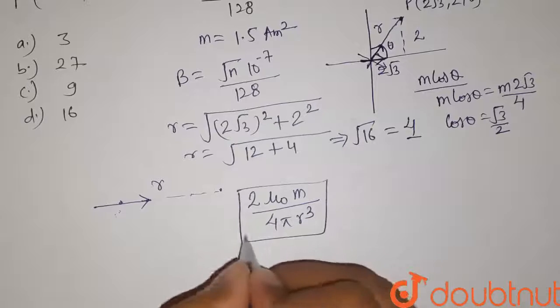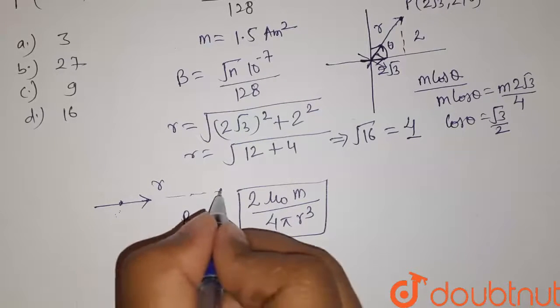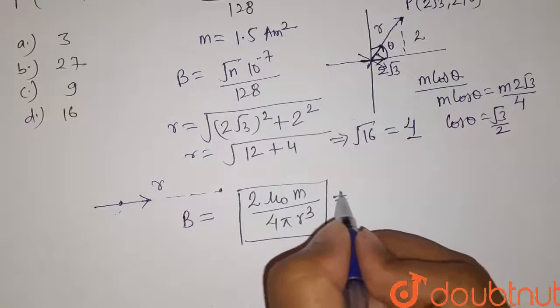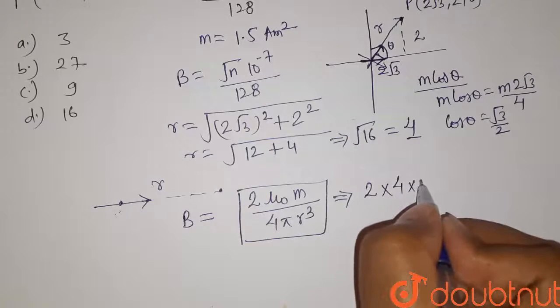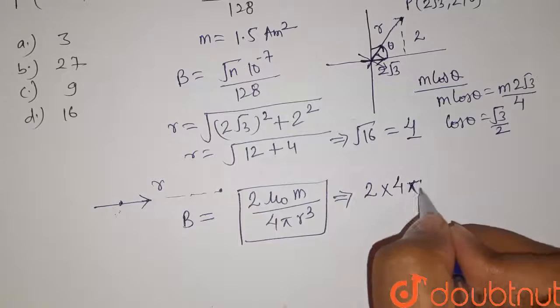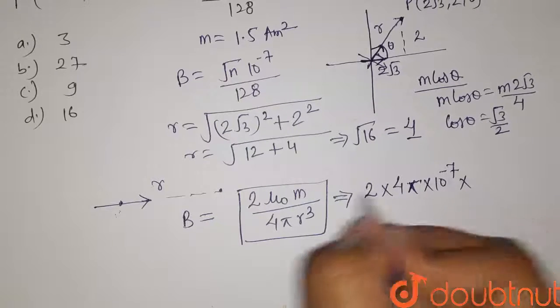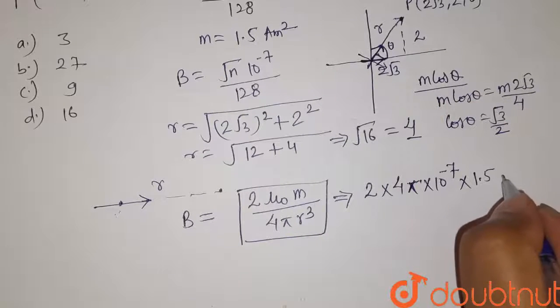So this is the formula for magnetic field for this dipole on the same line. So now put the values in this formula: we have 2 into the value of μ₀ is 4π × 10⁻⁷ into the value of m is given here 1.5 cos θ, so cos θ is equals to √3 by 2.